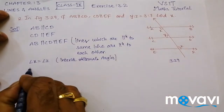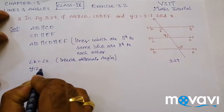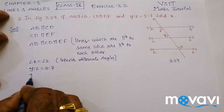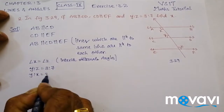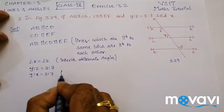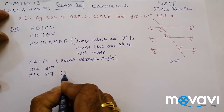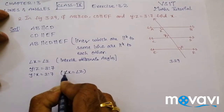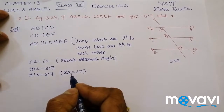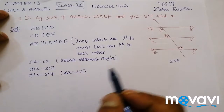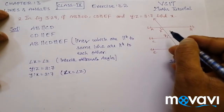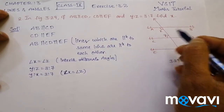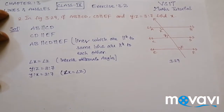What they have given is Y is to Z is equal to 3 is to 7. This can be written as Y is to X is equal to 3 is to 7, because angle X is equal to angle Z. Now X and Y are on the same side of the transversal, where their sum will be equal to 180 degrees.